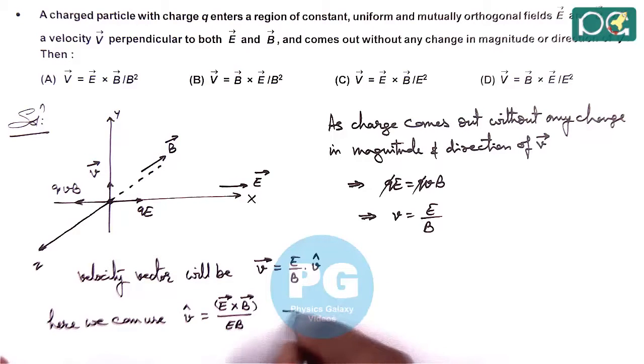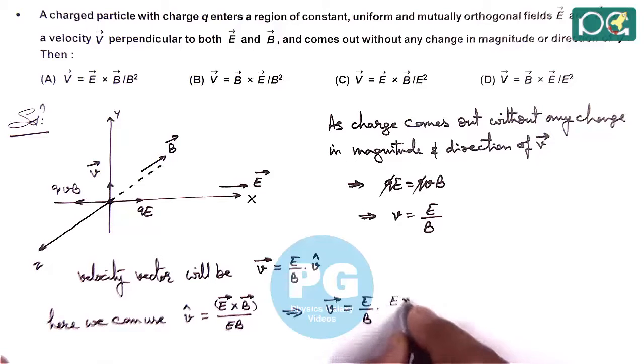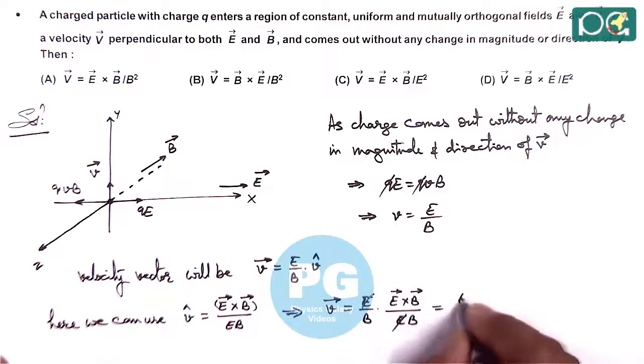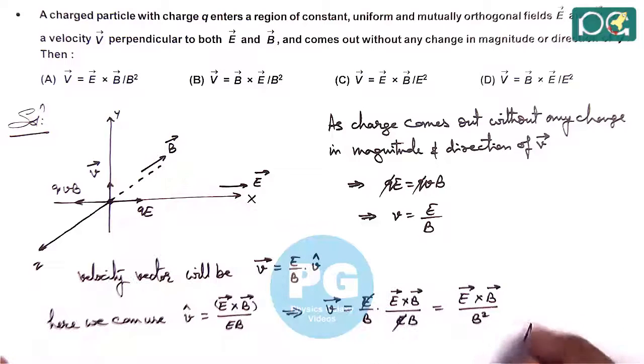So here this is giving us the velocity vector is E by B, multiplied by E cross B divided by EB, where E also gets cancelled out which gives E cross B divided by B square. Here it matches with option A, so answer to this question we are getting is option A.